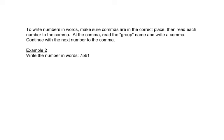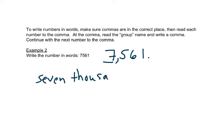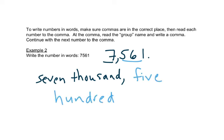This problem wants us to write the number in words. To write numbers in words, we need to first put the comma in the right spot. We start from the right, go three numbers over, and put a comma — that helps us read it. We read the number up to the comma first, which is seven, and then since the comma is at the end of the thousands group, we say seven thousand. Then we read the next group of three as five hundred sixty-one. There's no 'and' when you read a whole number — it's just seven thousand five hundred sixty-one.